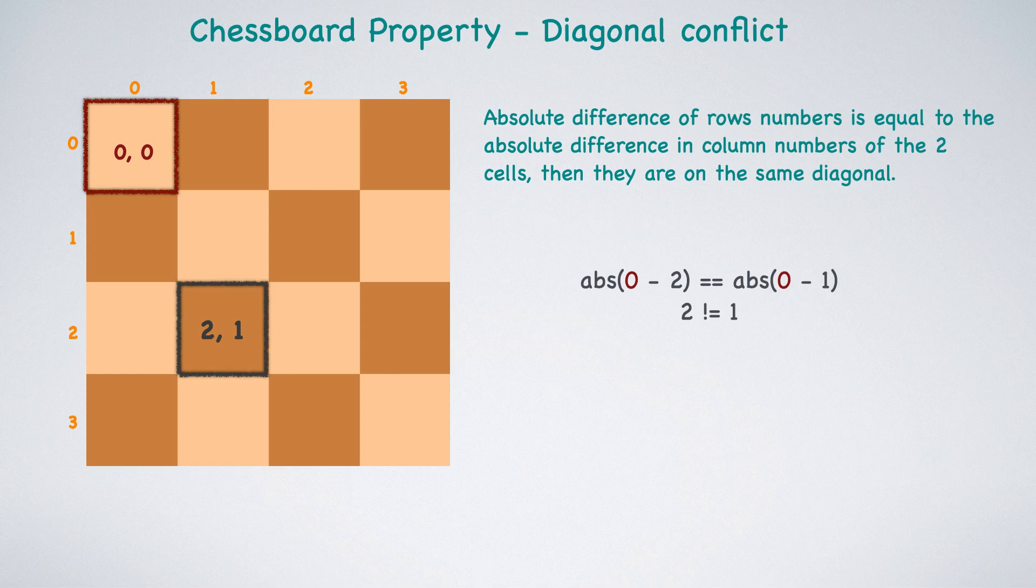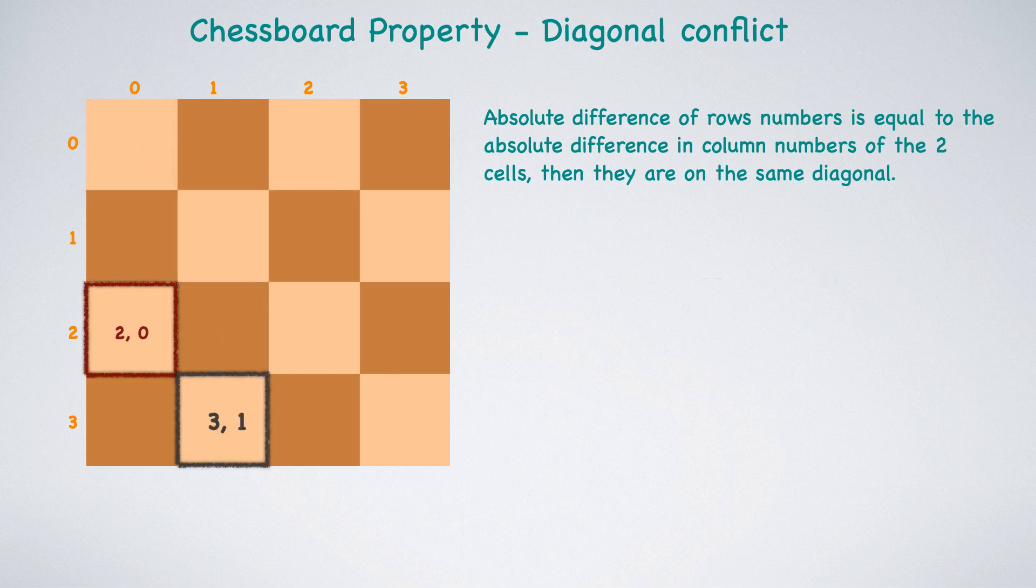Let's explore one more example. Are these two cells on the same diagonal? Let's compare the absolute of 2 minus 3 to the absolute of 0 minus 1, which is equal to 1, and so they are. This formula works for anti-diagonals as well. Please take a moment to experiment with the concept on your own to make sure you fully understand it. In our backtracking algorithm, as we place queens in cells, we'll check for conflicting queens along diagonals and anti-diagonals using this property. Next, we'll review the code starting with a look at the ISSAFE function.